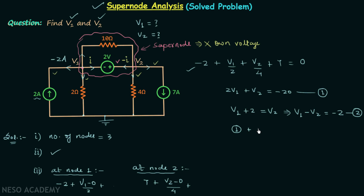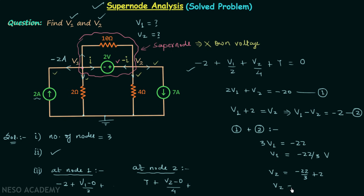Adding equation 1 and equation 2 gives 3 times V1 equals minus 22, so V1 equals minus 22 divided by 3 volts. Substituting V1 into equation 2 gives V2 equals minus 22 divided by 3 plus 2, which equals minus 16 divided by 3 volts. We have obtained voltages V1 and V2 using super node analysis. I hope you now understand super node analysis clearly. See you in the next lecture.